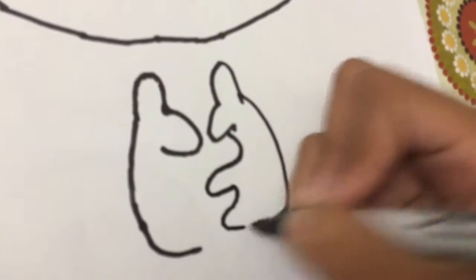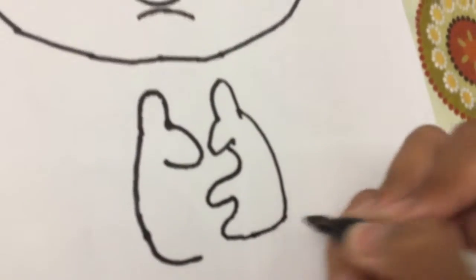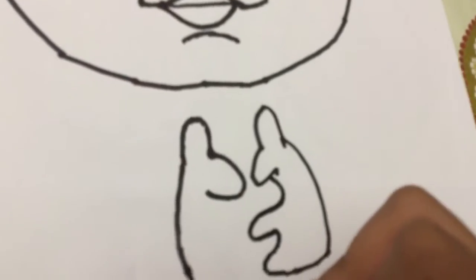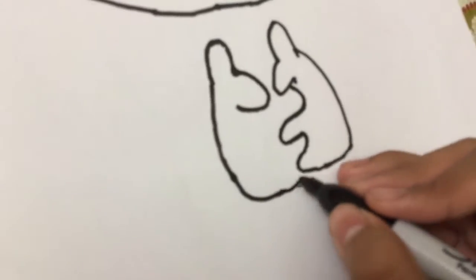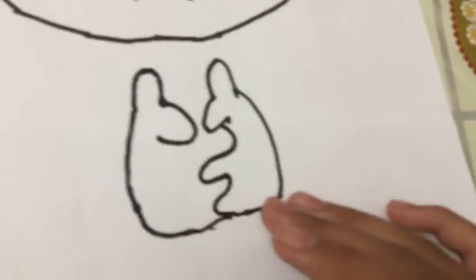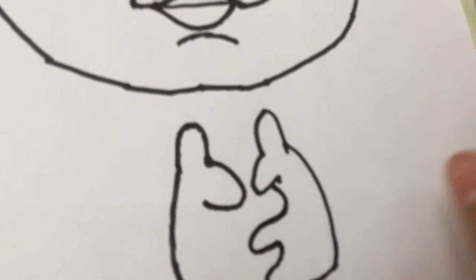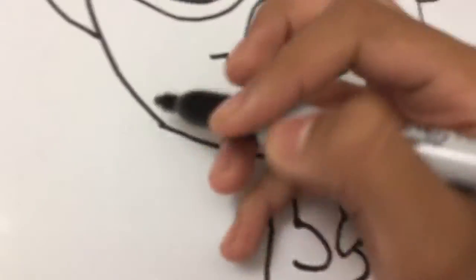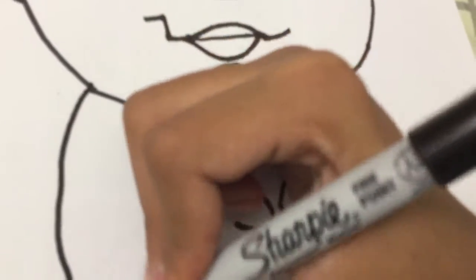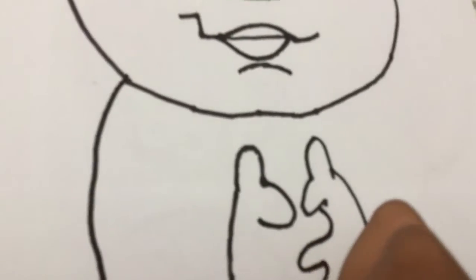And like this, then connect and do the same here like this. Okay, so that's the Boss Baby's hands. He's holding them like that. And then his suit he's wearing, like this.